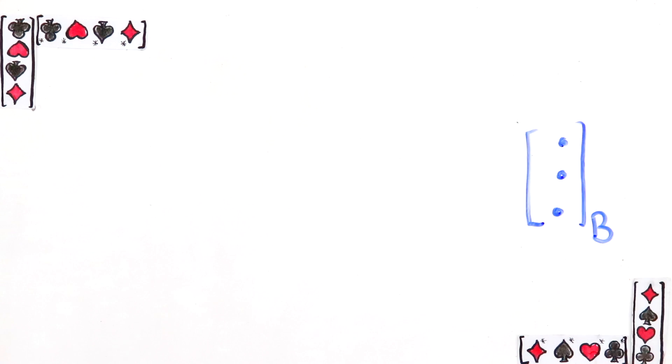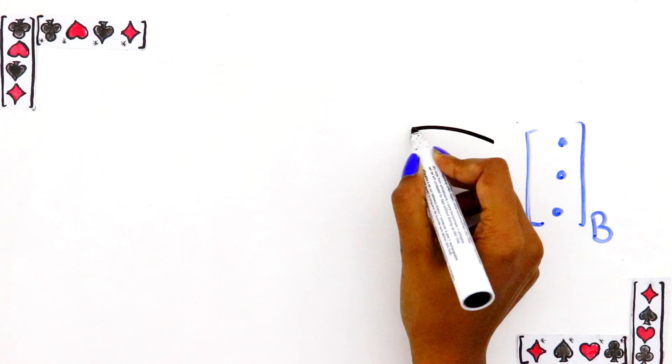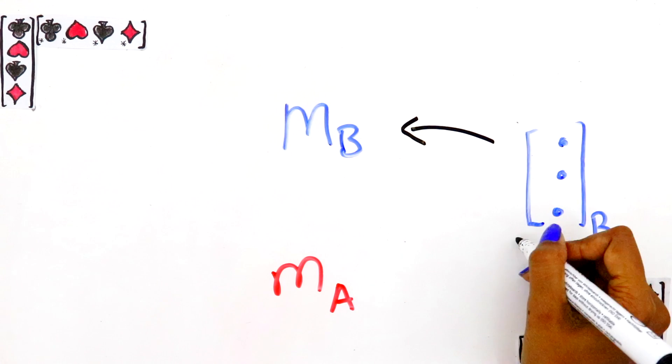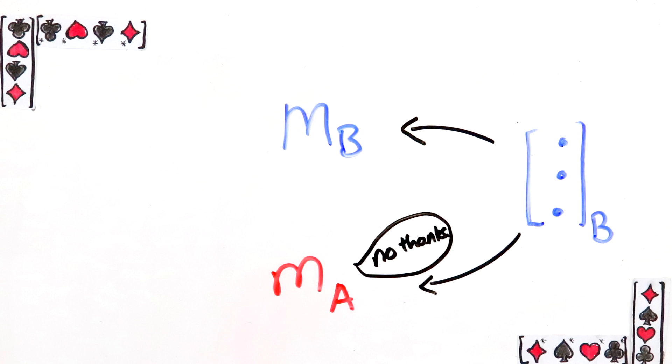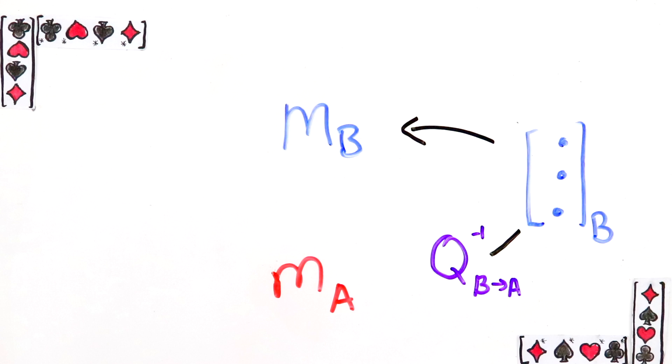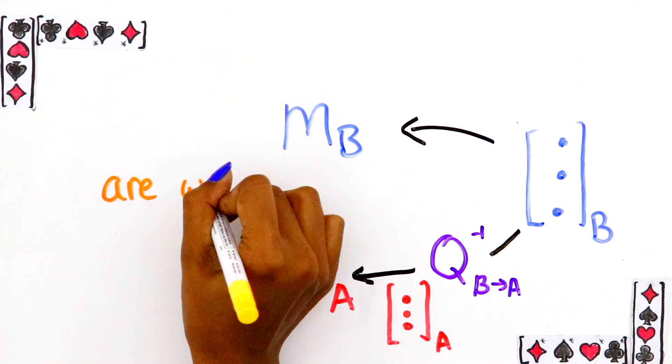She wants this matrix to take a vector written in Bob's basis and do the linear transformation. But her current matrix only takes vectors written in her basis. So why don't we just translate Bob's vector by applying Q inverse. This writes Bob's vector in her basis and in this new form you can apply her matrix to it. Okay great, so are we done?